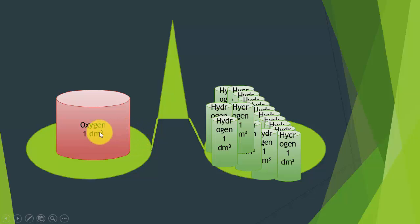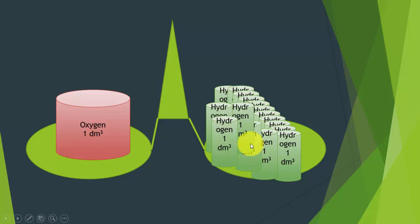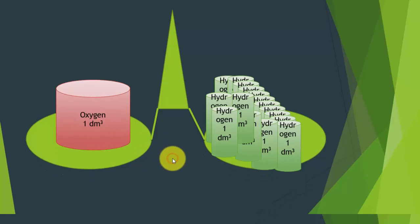The conclusion we draw is that one atom of oxygen is equal in mass to 16 atoms of hydrogen. That is why we require 16 cylinders of hydrogen to balance one cylinder of oxygen. This is how relative atomic masses could be determined practically.